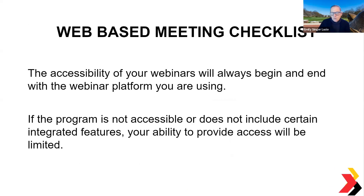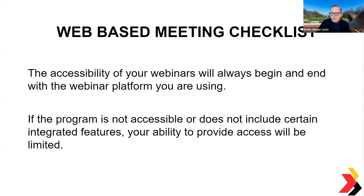A lot of us do web-based meetings these days, and accessibility of your webinars will always begin and end with the webinar platform you're using. If you're using Zoom, include captioning and make sure the event is accessible. If the program is not accessible or does not include integrated accessibility features, your ability to provide access will be limited. For example, if someone on a screen reader wants to use the raise hand feature, Zoom has accessibility features to do that — just be aware of those capabilities.